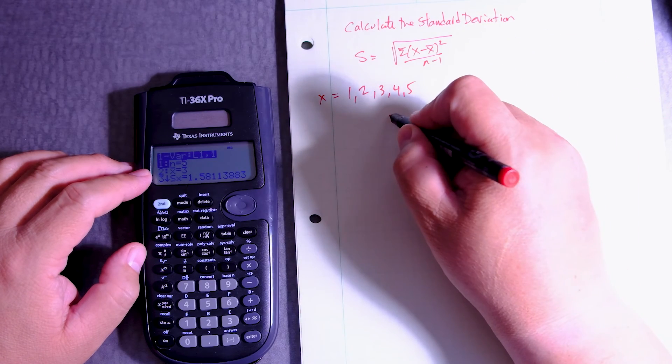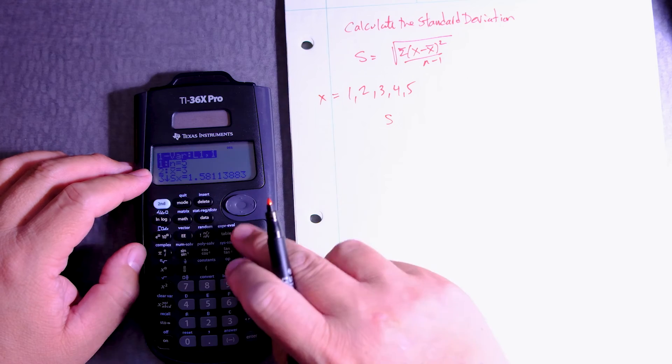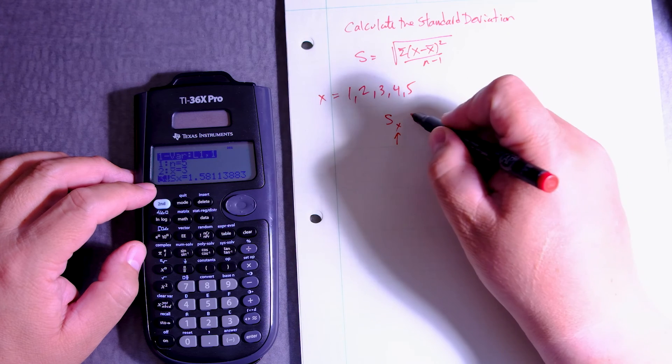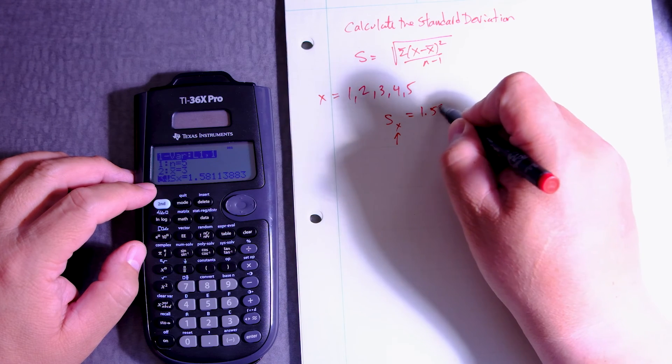And now what I'm going to do is find the standard deviation S. And here it is. SX for one variable. And that's equal to 1.5811.